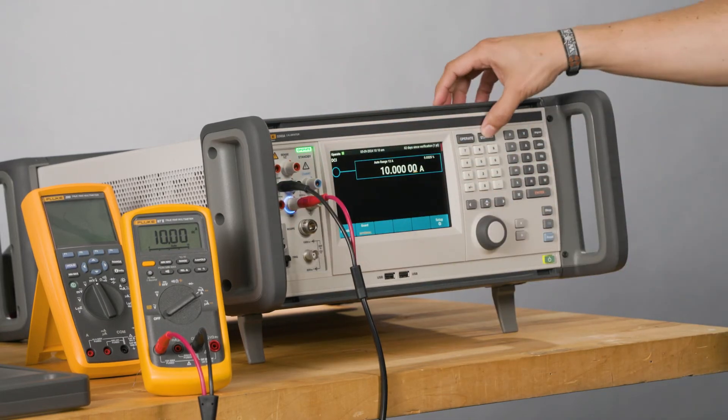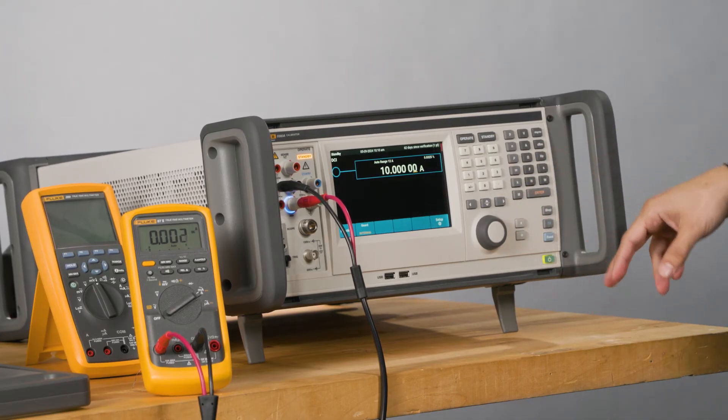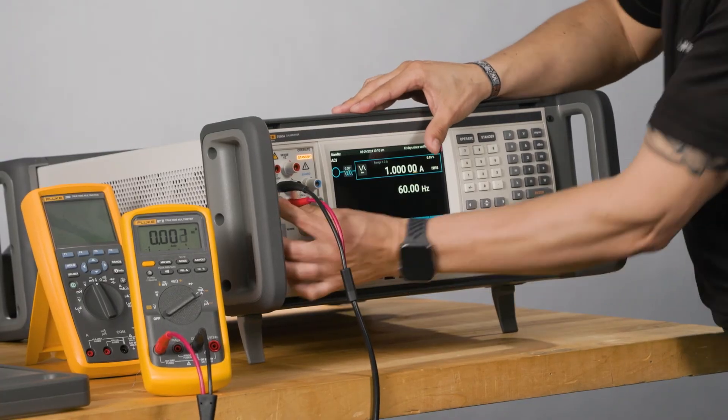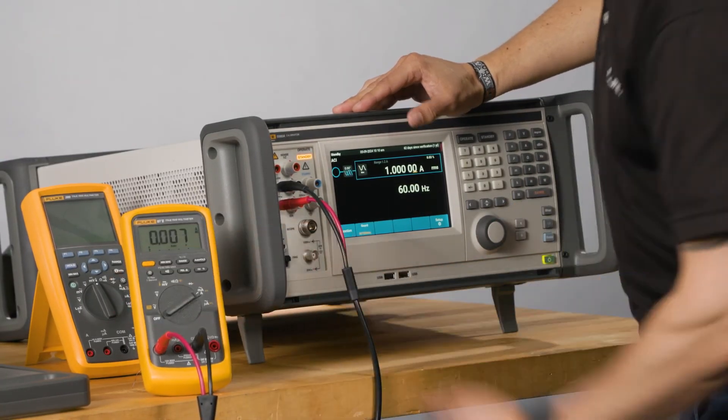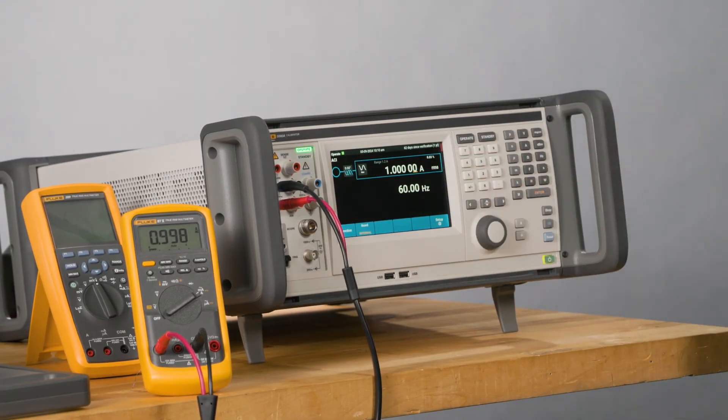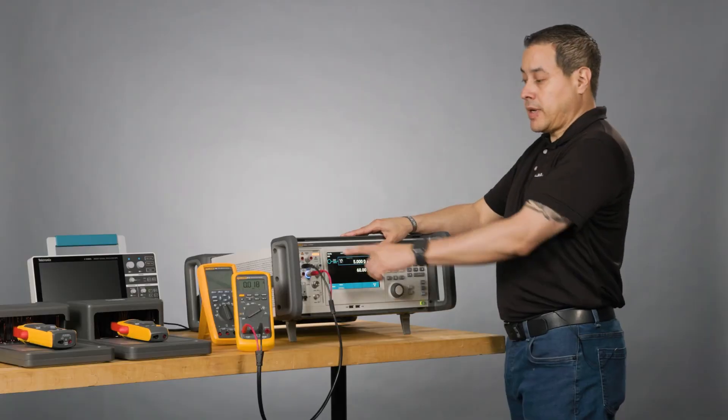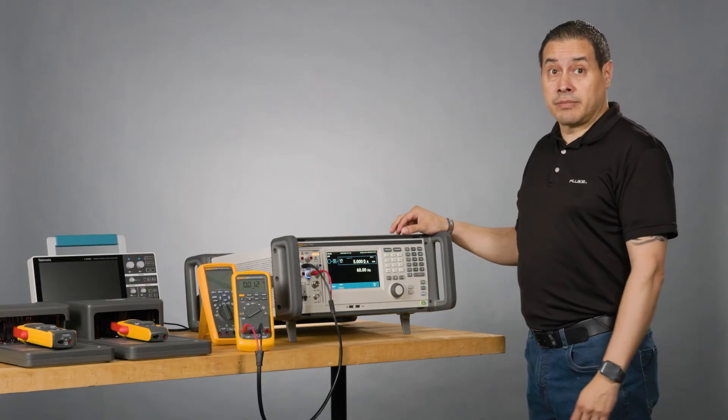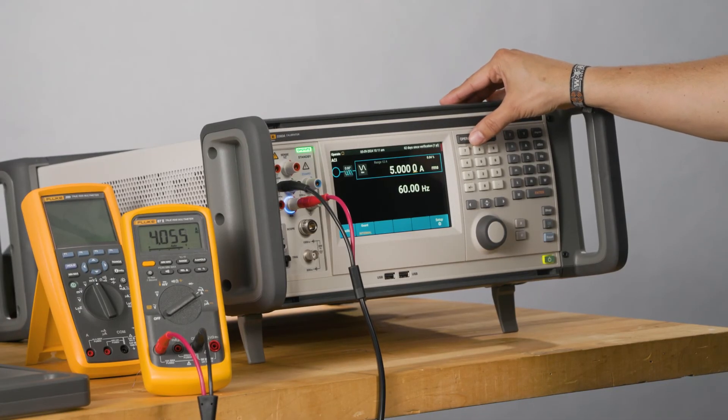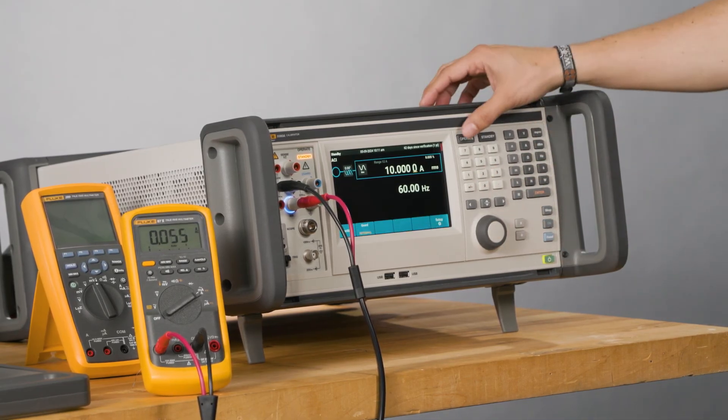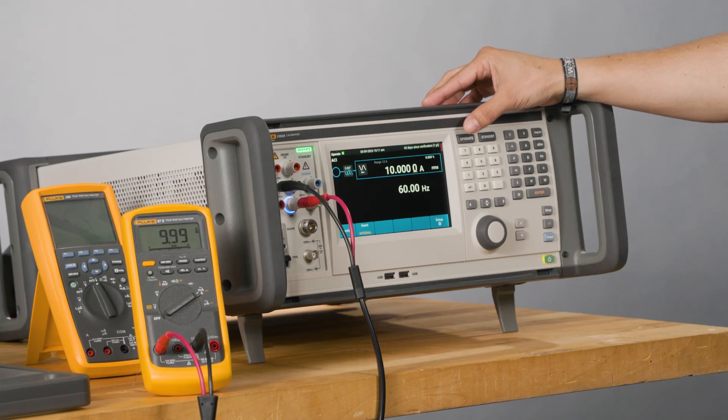10.00. I'm good. Next, I'll be jumping to AC current. So one amp, 60 hertz. I need to check the post. Then change to AC. My calibrator will tell me which post I need to use. So pay attention to the lights. 5 amps. Good. Perfect. Then last point. 10 amps in this case. And I'm done.